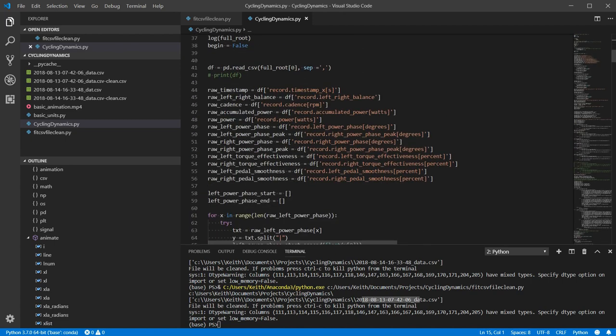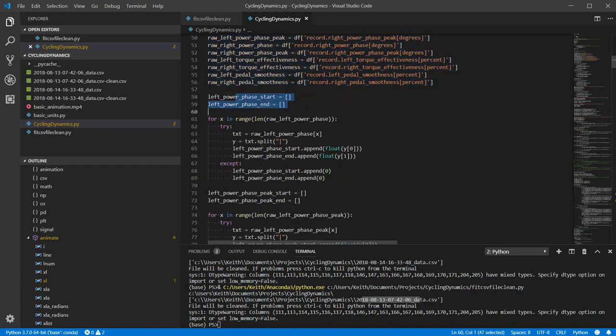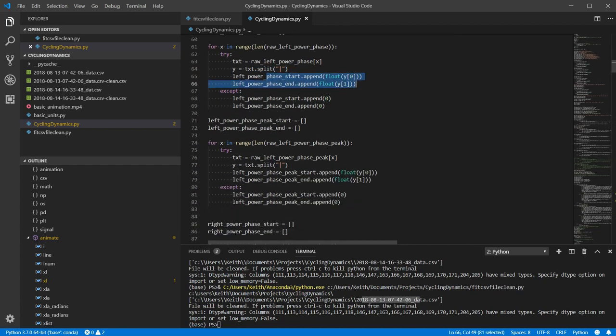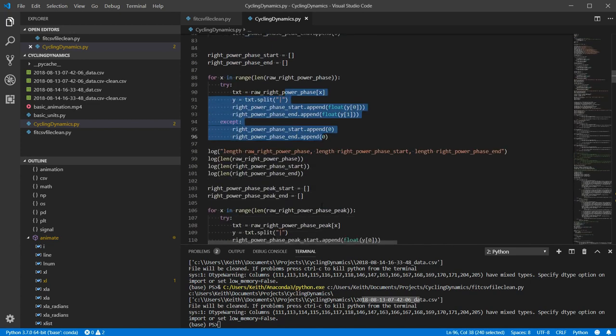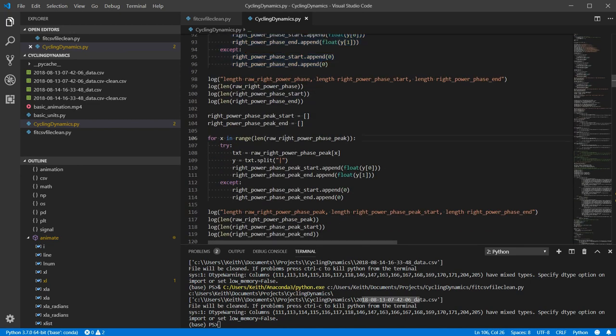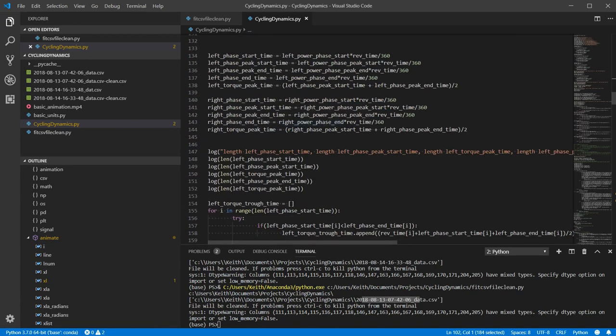So once you have that all done, we can go over into the cycling dynamics. And we're going to read in one of the files that in the square brackets, that's which file in the folder. Extract some basic stuff from the data frame into just lists. And then we have to start extracting stuff from the cycling dynamics. So we have to use text split and convert it to floats and do that for every single one.